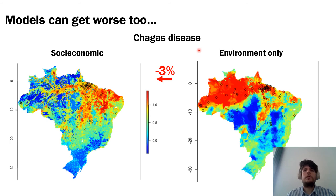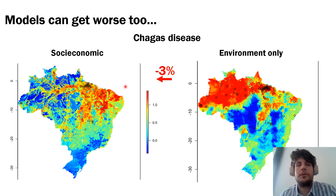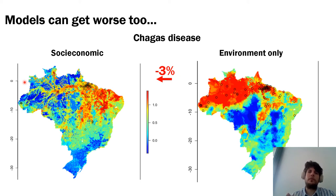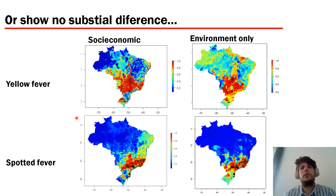Chagas disease also had a very interesting result: after we added social-related variables, the model performed 33% worse, with a lower capacity to correctly distinguish presences. This is actually a good result to discuss, since it shows that some ecological niche models incorporating socioeconomic variables may actually worsen performance in defining true presences. Some diseases had no substantial difference in model performance between the socioeconomic and environment-only models. One should decide whether it makes sense to keep those socioeconomic variables, remembering Ockham's razor principle that simpler models should be preferred over complexity.